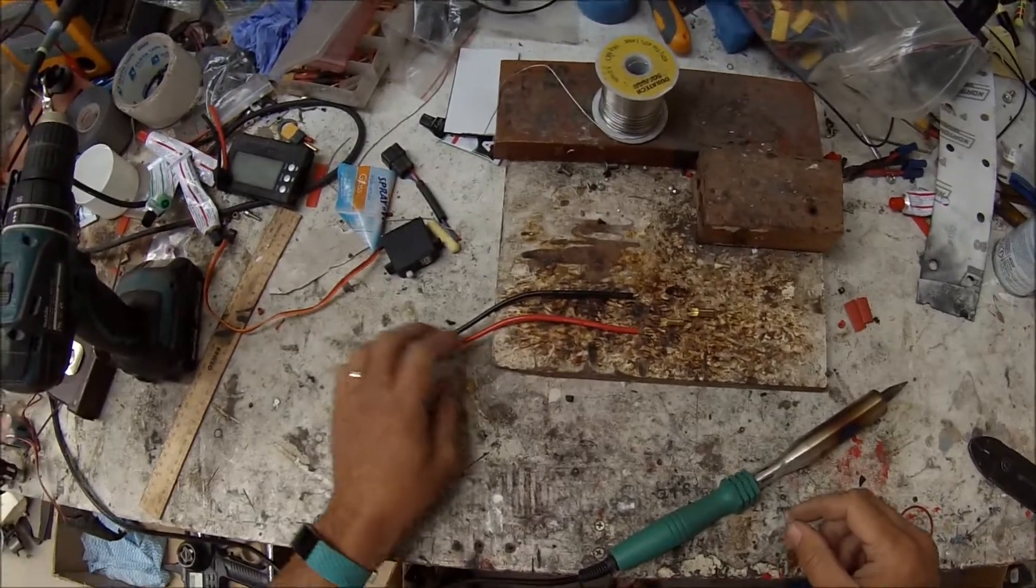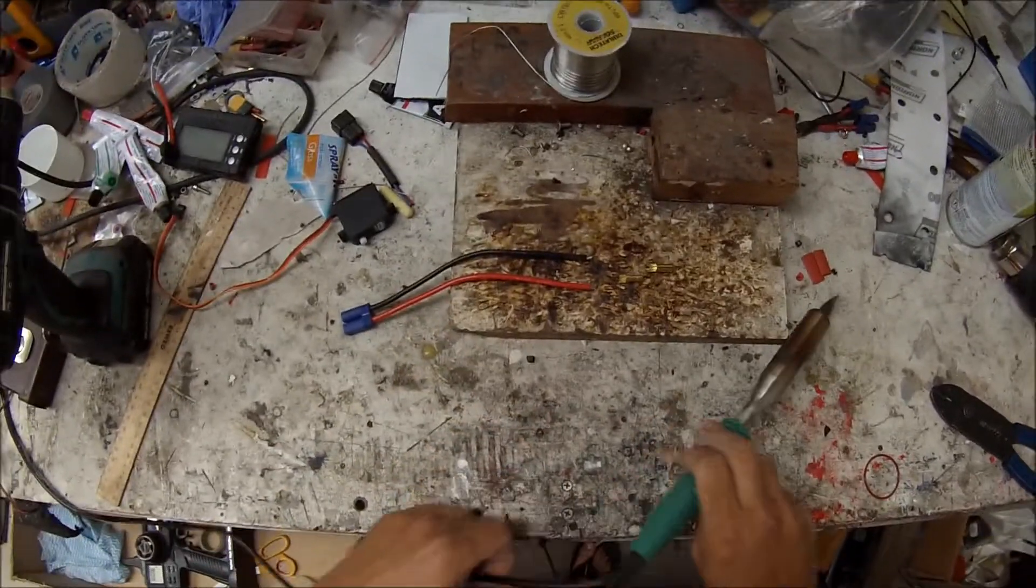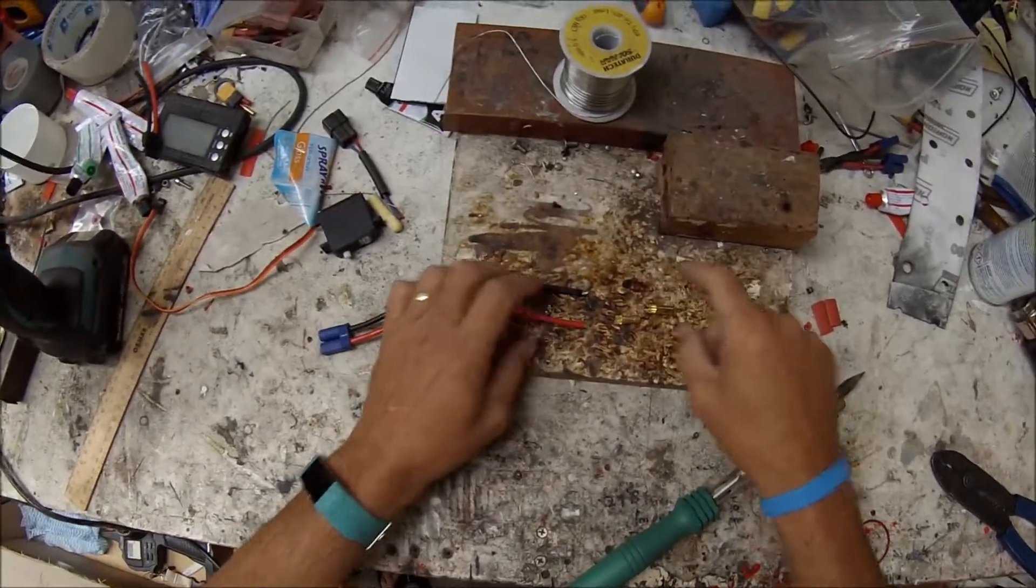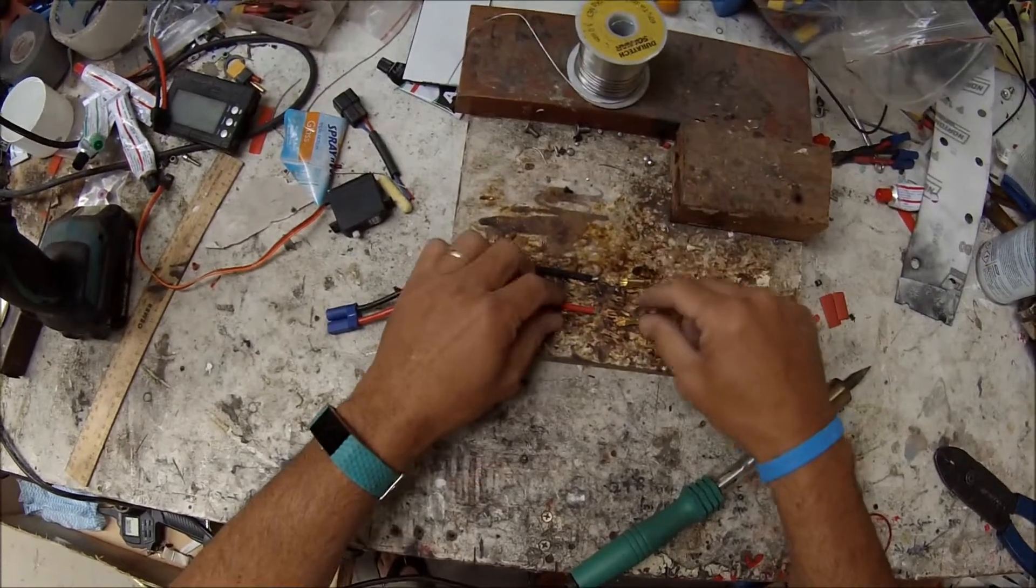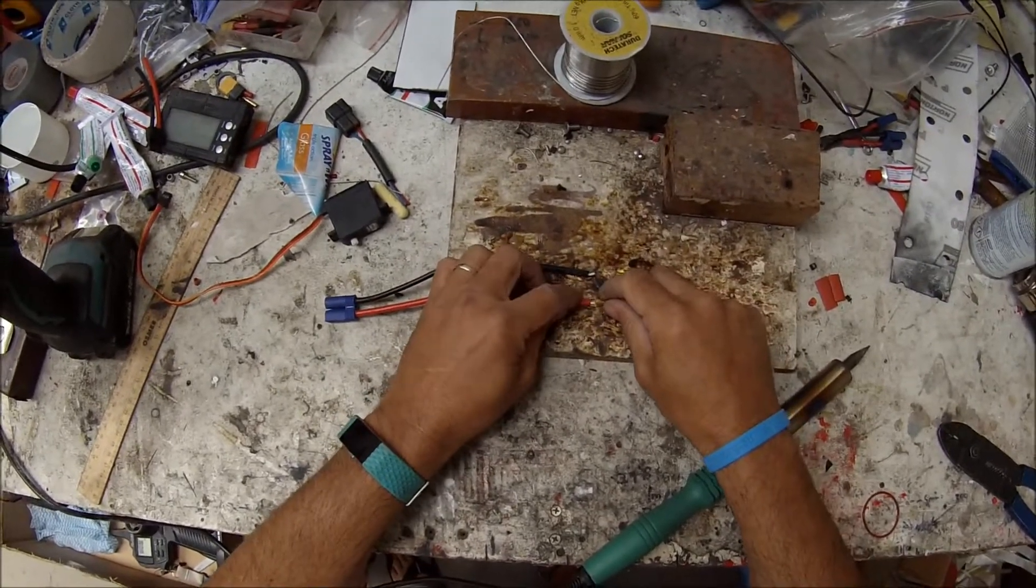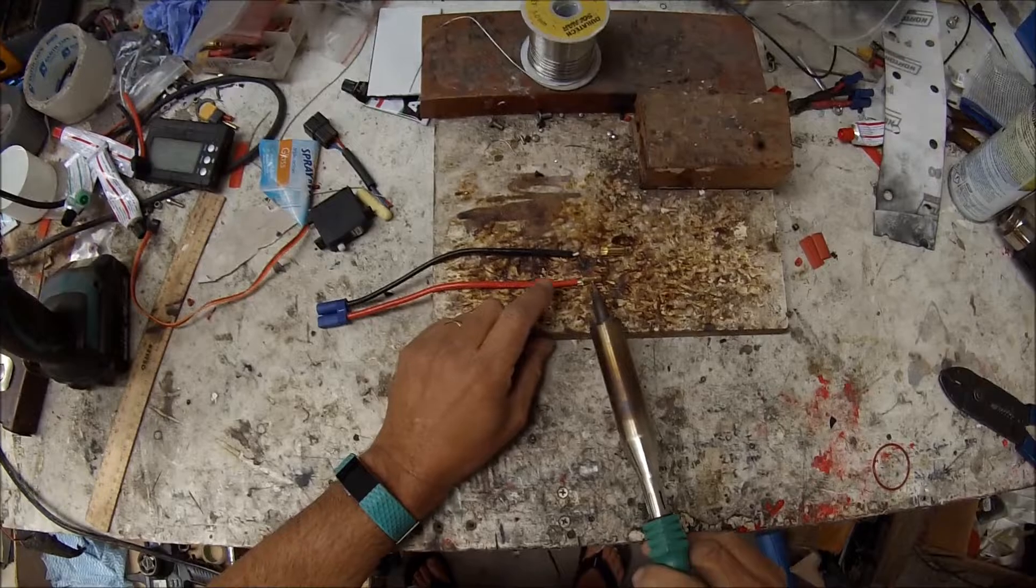I use five and a half mil terminals on the speed controller, you know, all my boats actually. So we're going with five and a half mil. Doesn't matter which side you're going to put these on, it's going to be a male and a female.